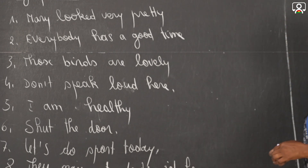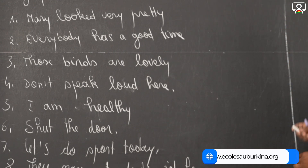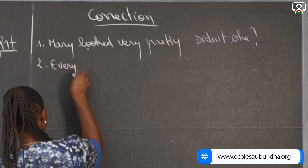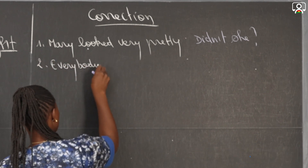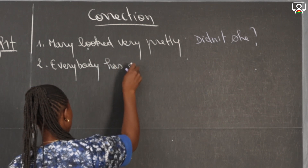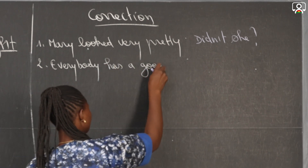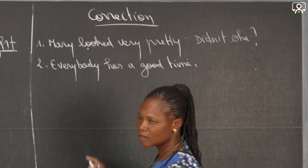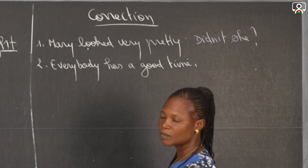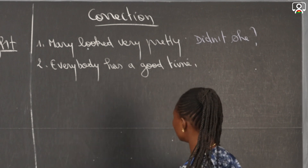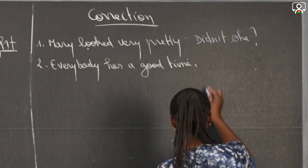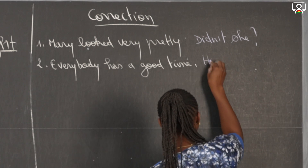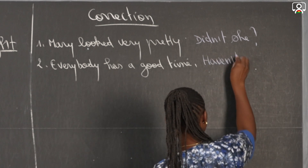Number two: everybody has a good time. Remember that when you have 'everybody', you replace it by 'they'. And the sentence is positive. So we are going to have here 'haven't they'.